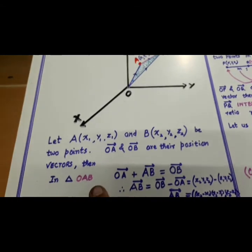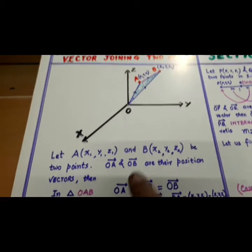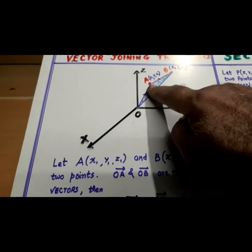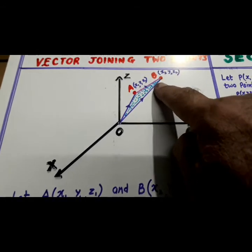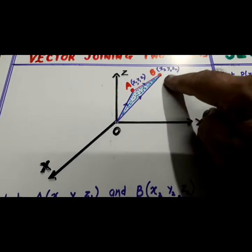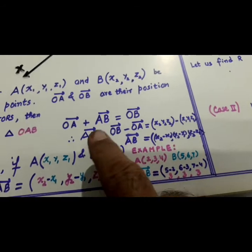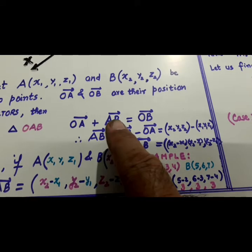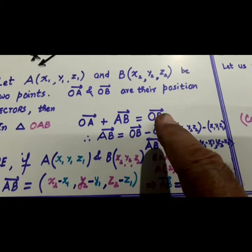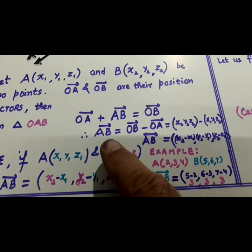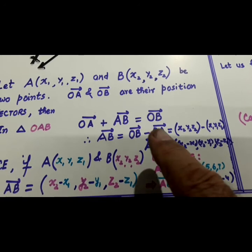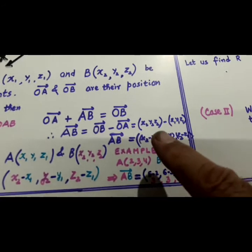In triangle OAB, OA plus AB is equal to OB. Triangle law. As per the triangle law, OA plus AB is equal to OB. AB will be equal to OB minus OA.